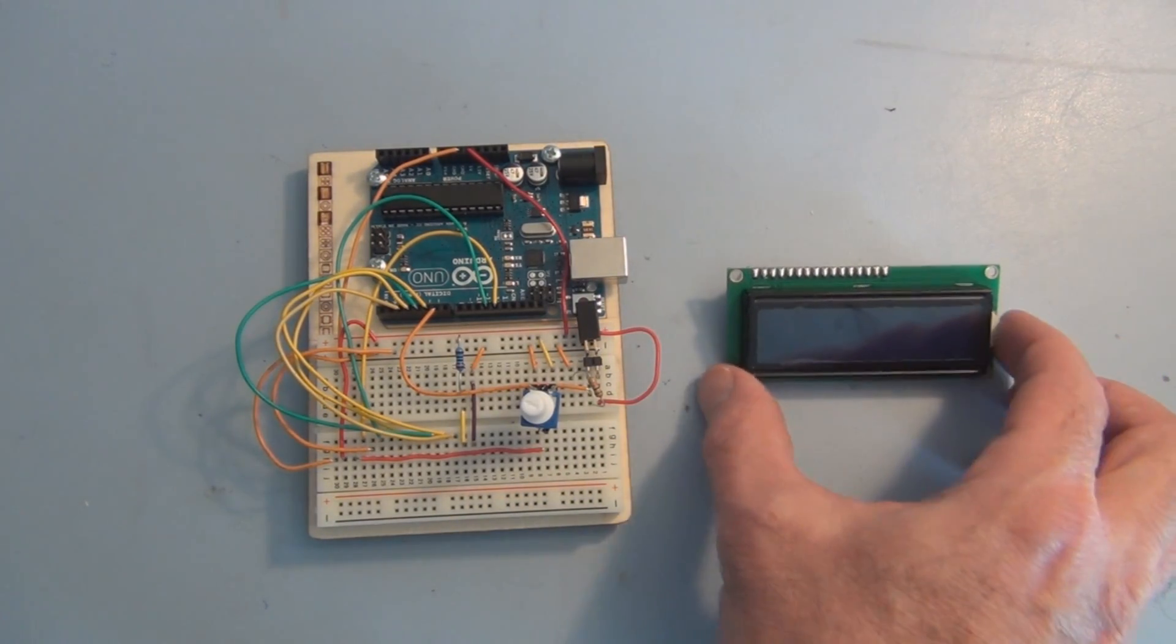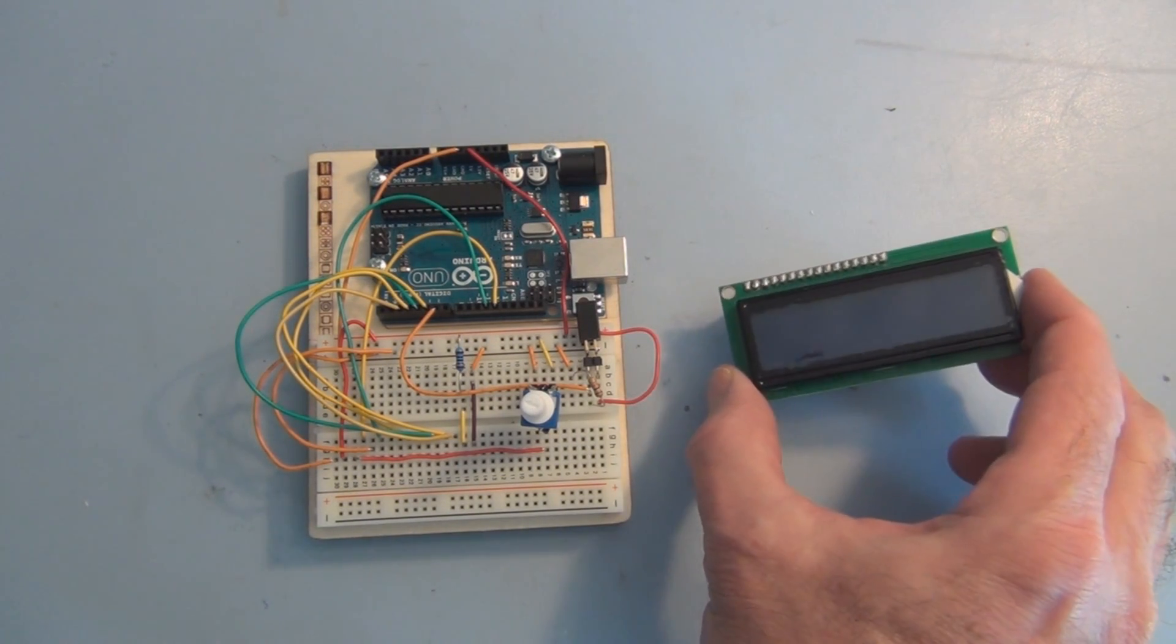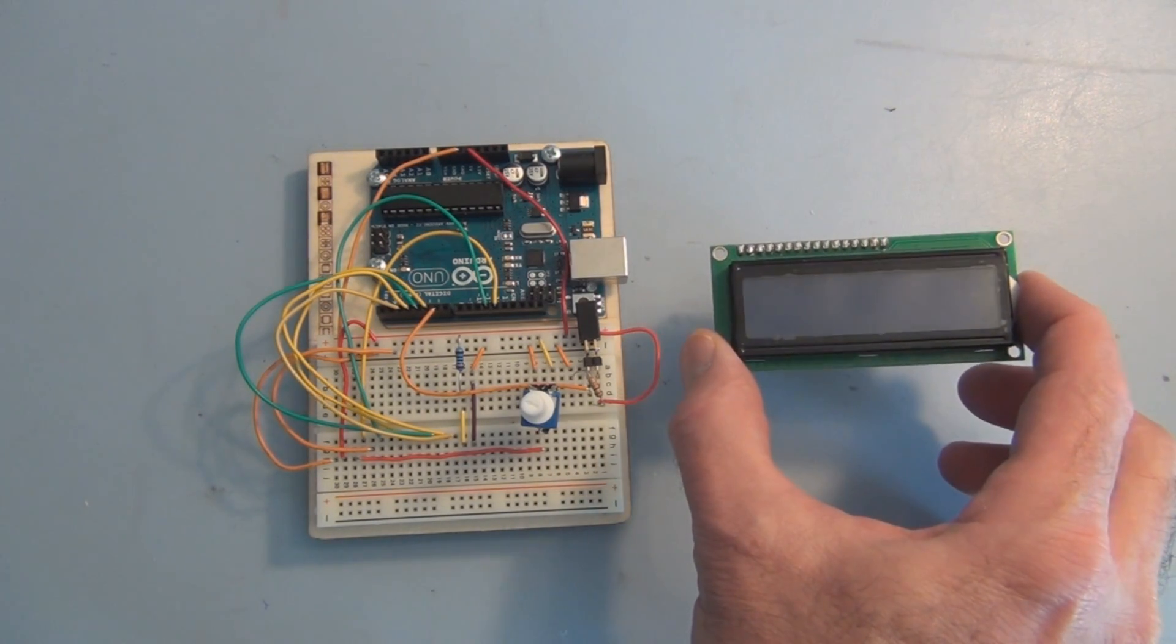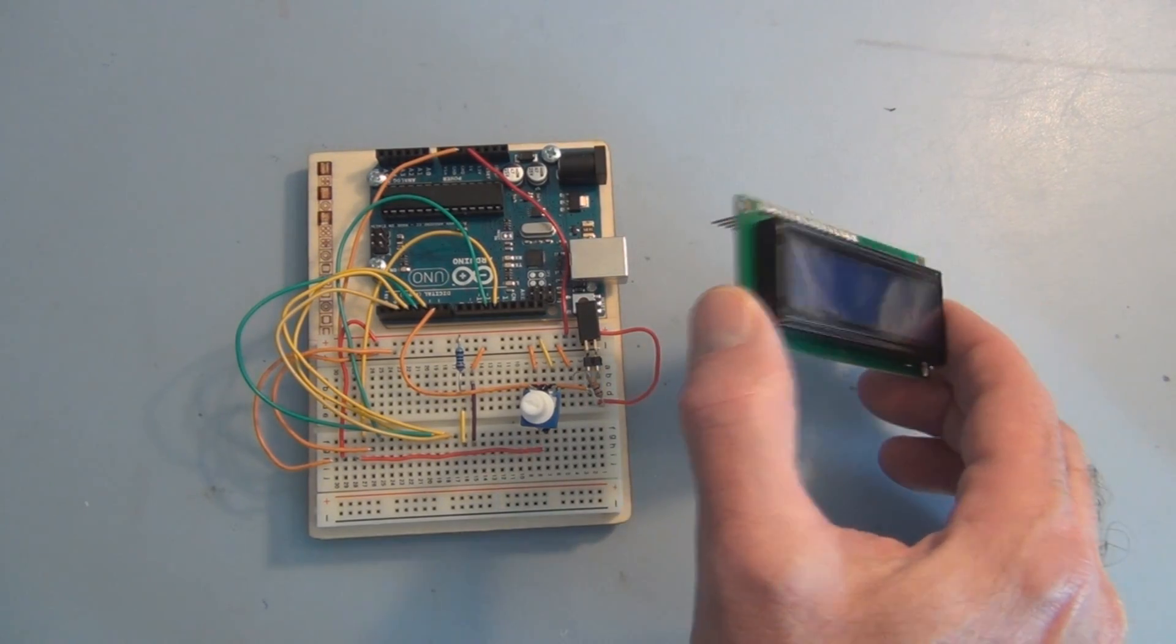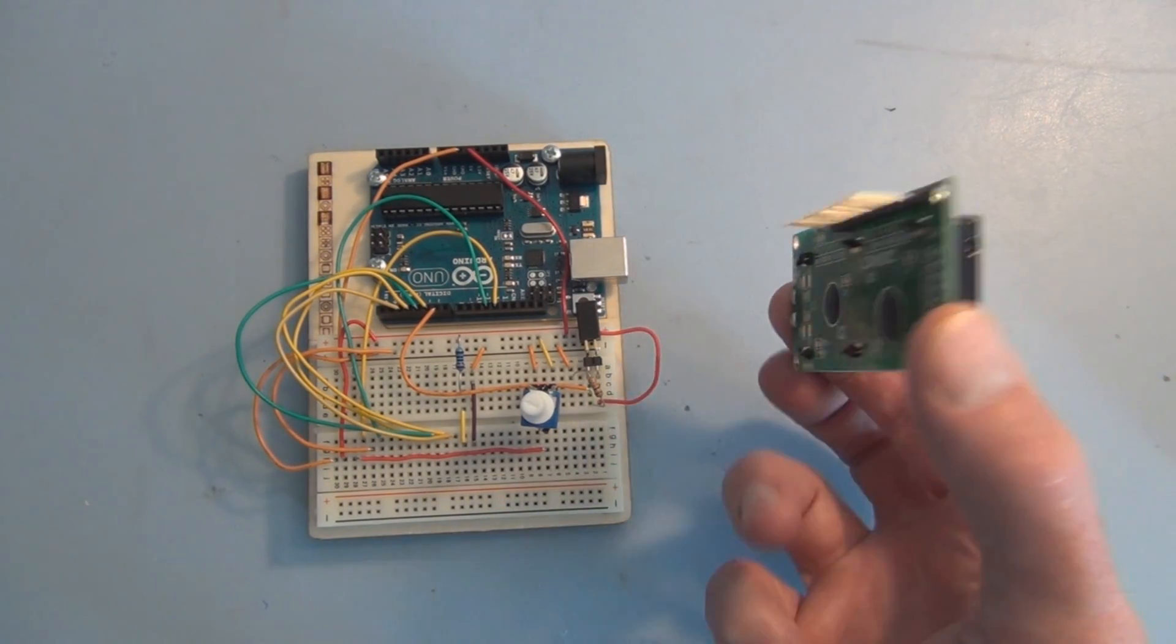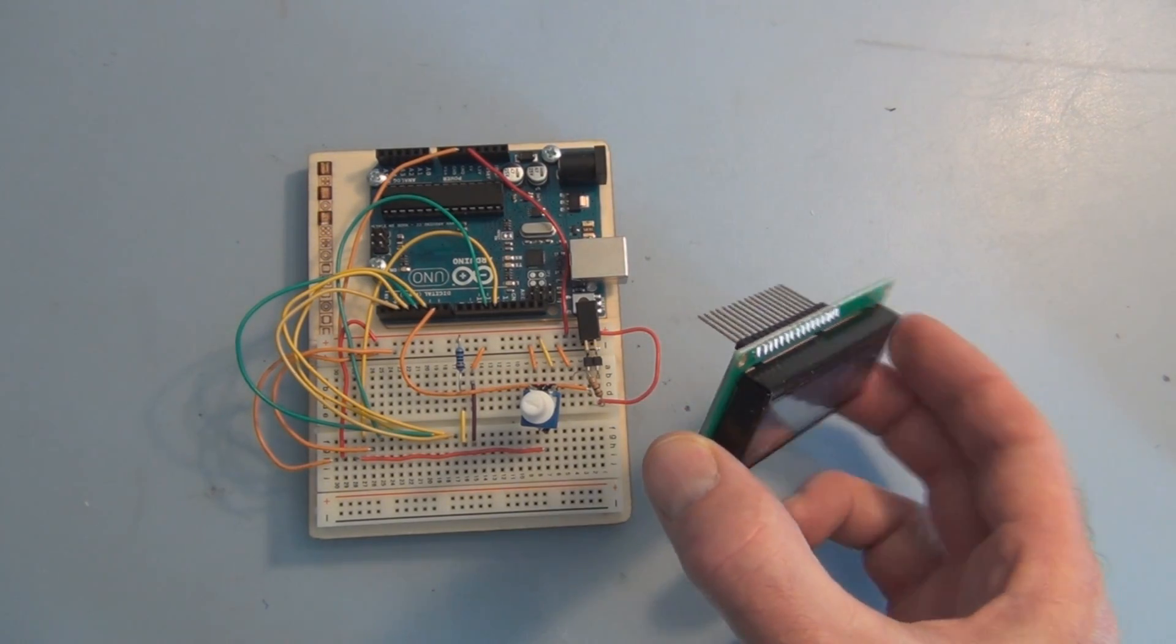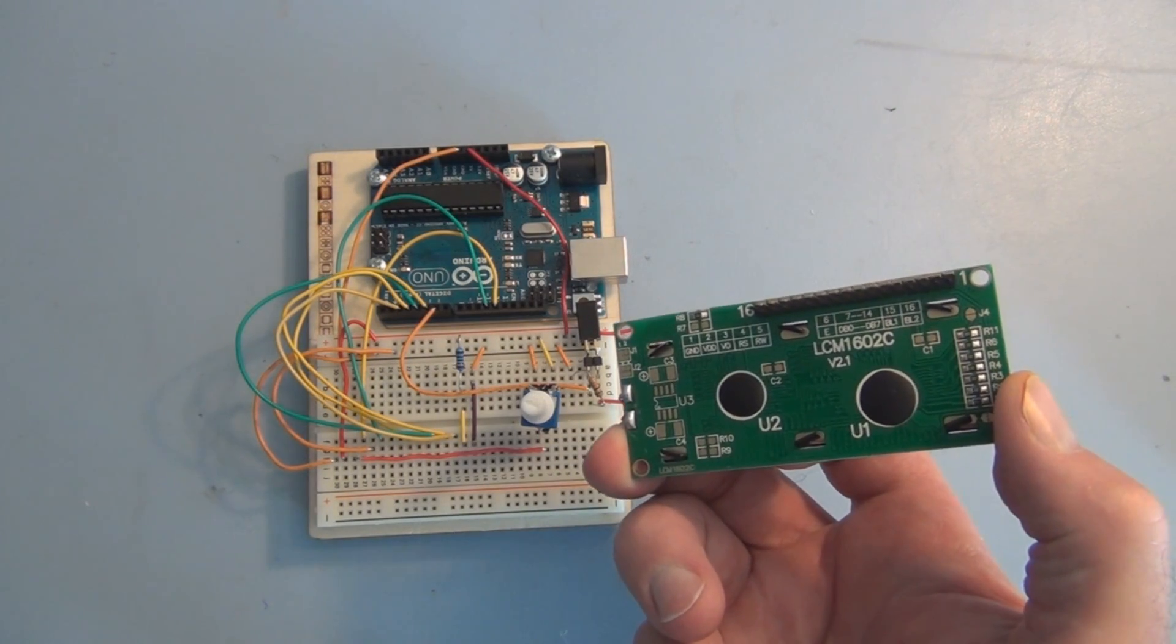This is a 16 column by 2 row alphanumeric display. So we can display 32 alphanumeric characters on this display. It's got just a single row of male header pins on the back here. This is a 1602A.